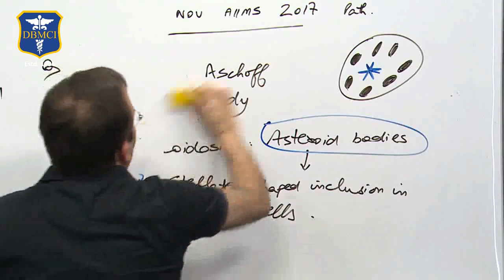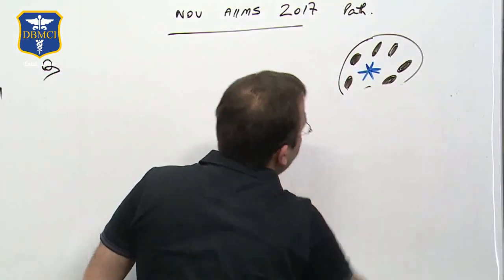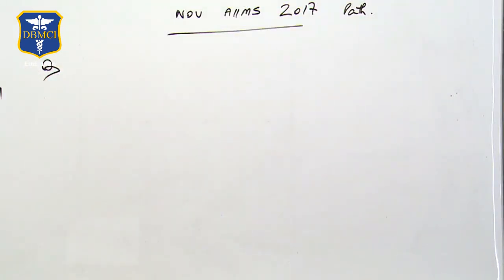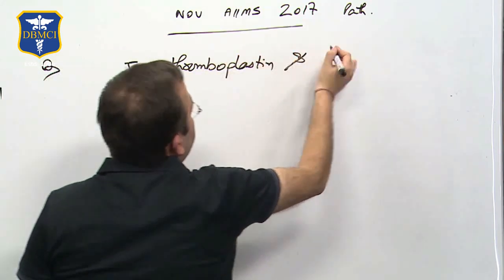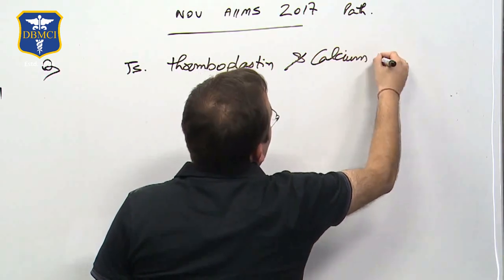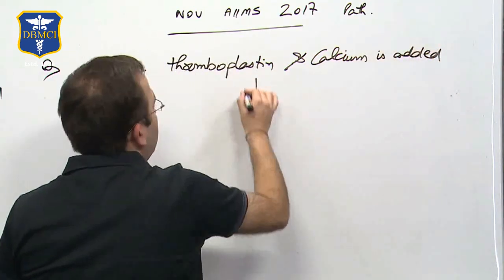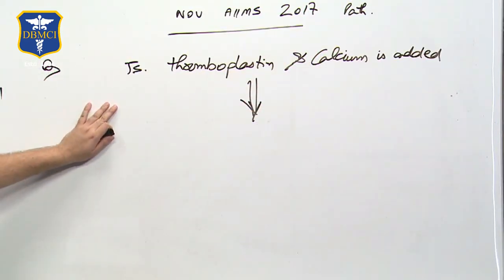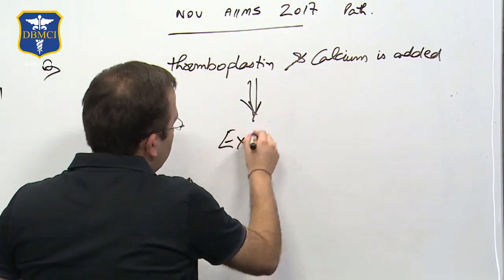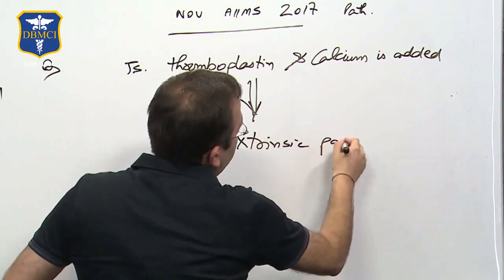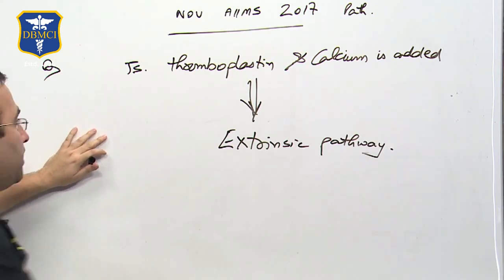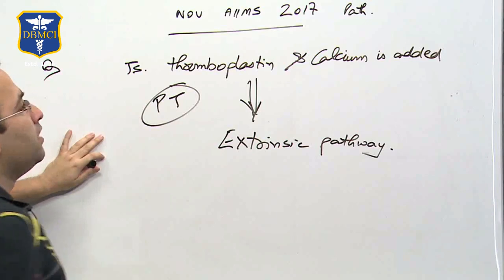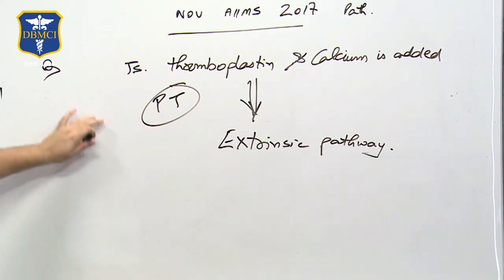The next theory question from hematology asked: when tissue thromboplastin and calcium are added, which coagulation pathway is activated? The answer is the extrinsic pathway, and this is how we detect PT — prothrombin time.